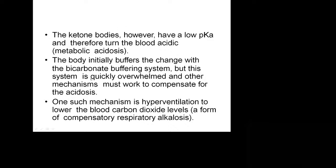The ketone bodies have a low pKa and therefore turn the blood acidic — causing metabolic acidosis. The body initially buffers with the bicarbonate buffering system, but it gets exhausted very fast. Then the compensatory mechanism of respiratory alkalosis starts — the body tries to maintain pH by washing out CO2 through rapid breathing. Whenever the body breathes rapidly due to hyperventilation, CO2 is washed out, carbonic acid levels drop, and pH rises. This respiratory alkalosis is the compensatory mechanism to maintain pH at a normal level.